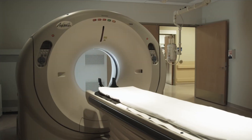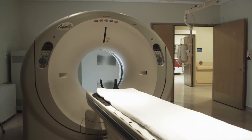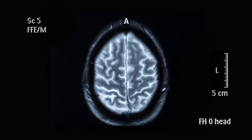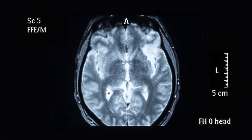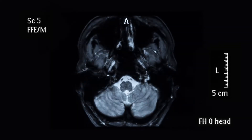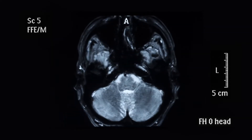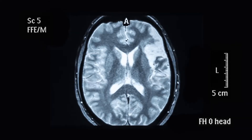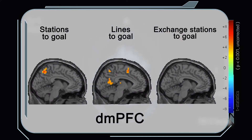We found that reaction times were best predicted by a hierarchical measure of plan complexity. On top of the behavioural measures, we also used fMRI to look at which brain regions might reflect flat or hierarchical representations of journey complexity. We found this region — the DMPFC, or the Dorso-Medial Prefrontal Cortex — was reflecting the complexity of the journey in a hierarchical way.